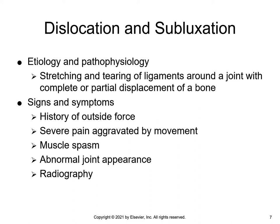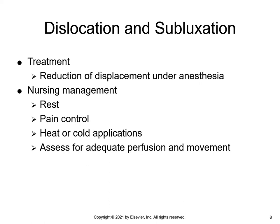A dislocation is the stretching and tearing of ligaments around a joint with complete displacement of the bone. Subluxation is a partial dislocation. The most common sites for dislocation or subluxation are the shoulder, knee, ankle, and the temporomandibular joint. The treatment goal is to stabilize the joint after reduction and then to rehabilitate to minimize muscular atrophy while strengthening the joint.